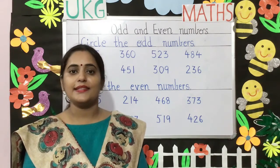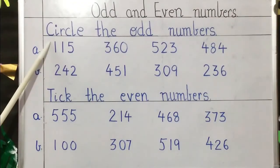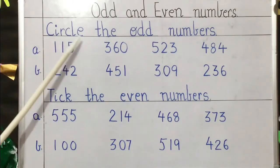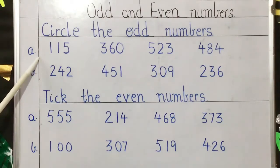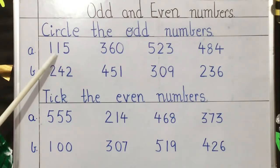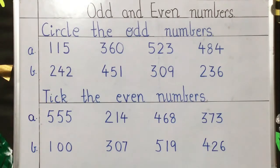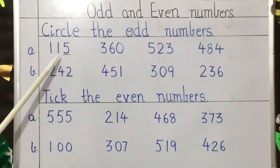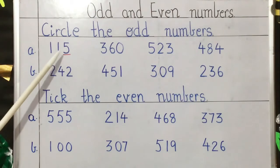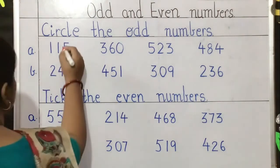Now let us solve a few questions based on this. In the first question it says: circle the odd numbers. The first number is 115. Children, you have to check the last digit of the given number. Here it is five, so five is an odd number, so 115 will be an odd number. We will circle this number.